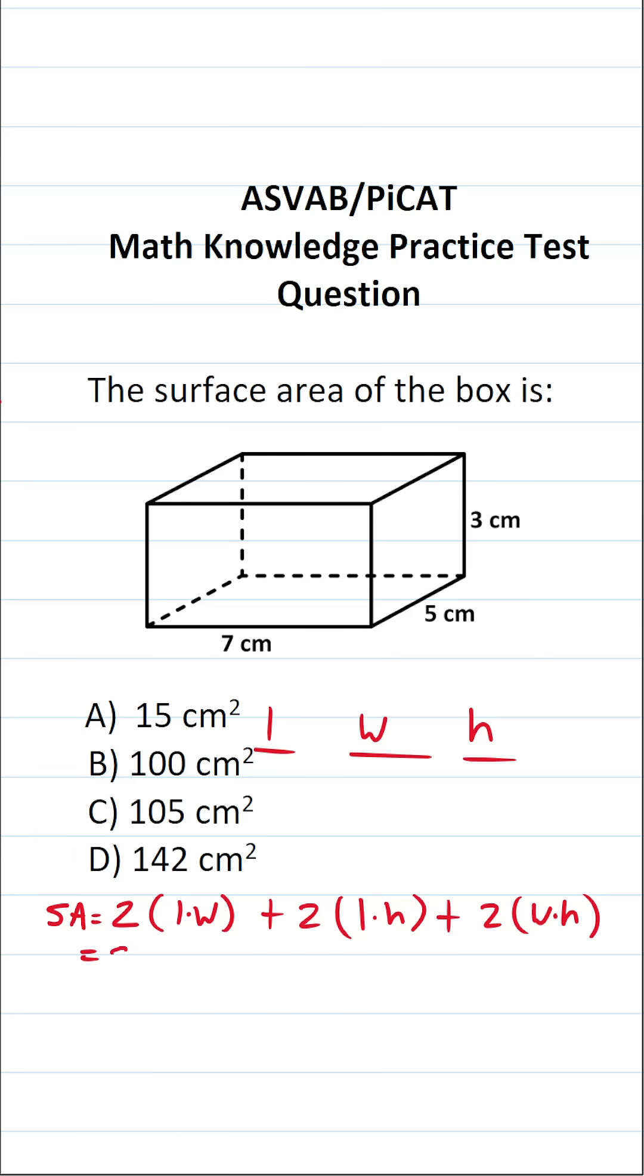The rest is just plugging values in and doing the math accordingly. This becomes, and this is our length, this is our width, and this is our height. This becomes seven times five plus two, seven times three plus two, five times three.